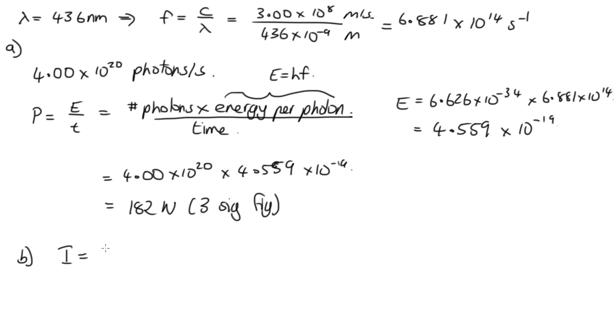So the intensity is related to the power divided by the area. And because it's spreading out isotropically through space, it's spreading out over the surface of a sphere. So that area is the surface area of a sphere. So this is equal to 182 over 4 pi times R squared, which is 2 squared.